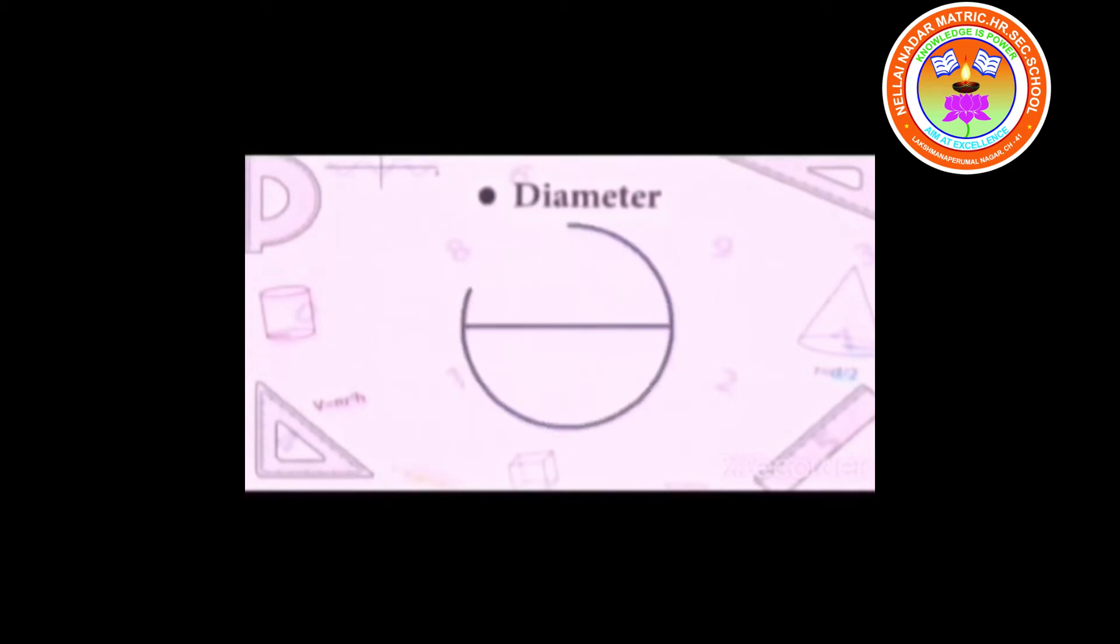Diameter. The line that divides the circle into two equal halves is called as the diameter. In this figure, PQ is the diameter of the circle.